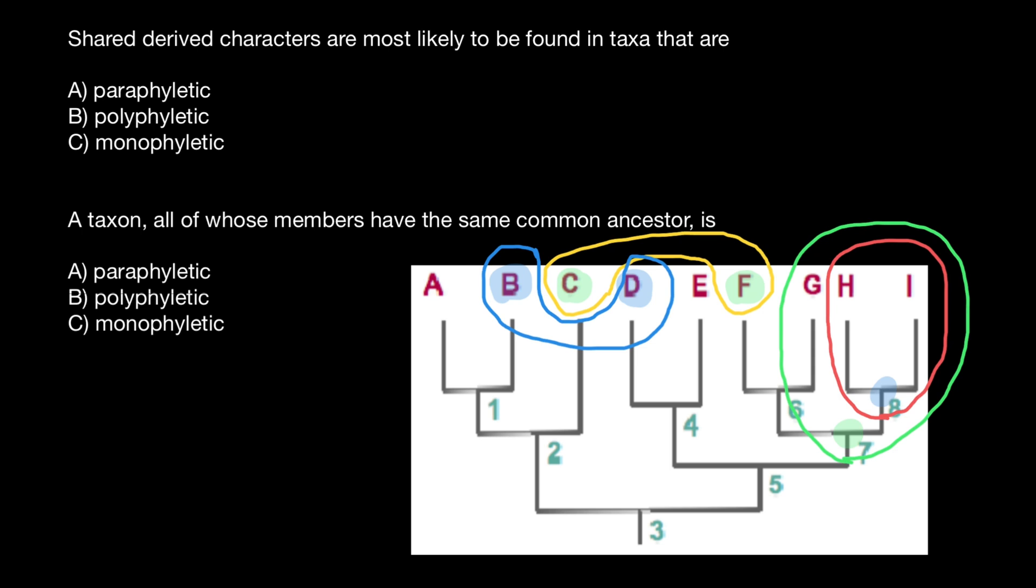Now let's do a little bit more practice. For example, how do we call a group like this? I hope by now you can give the name, and this is going to be monophyletic, because here we have a common ancestor, and we have encoded all the descendants of the ancestor one. So this is monophyletic group.